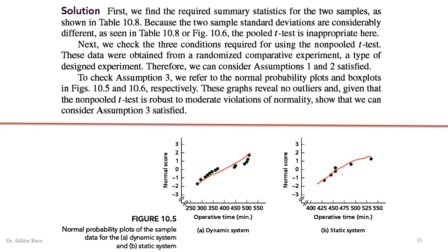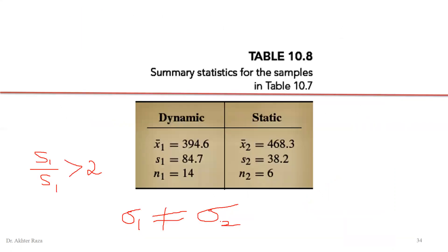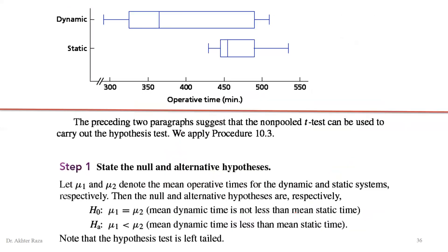The assumption of random sample is fulfilled. The assumption of independent sample is fulfilled because the two procedures are conducted independently in different hospitals. Normal population and random sample assumptions are also satisfied — three assumptions are fulfilled. The fourth assumption, unequal standard deviations, is confirmed both by the informal ratio procedure and by the box plot, which shows one box very small in width and the other very large, clearly indicating unequal population standard deviations. Therefore, we apply the non-pool t-test.